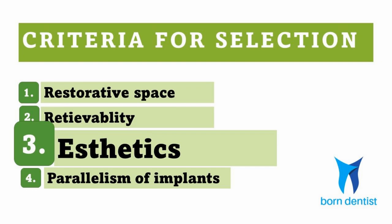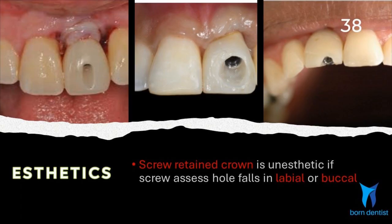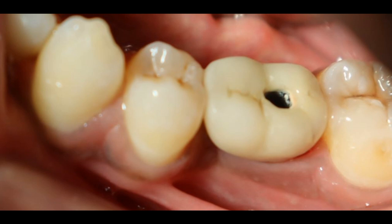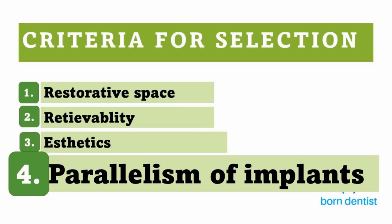The next factor is aesthetics. In a screw retained crown, the screw access hole is a dampener for aesthetics, especially if it falls on the labial side in anterior restorations. So when aesthetics is of prime concern, a cement type is more suitable.